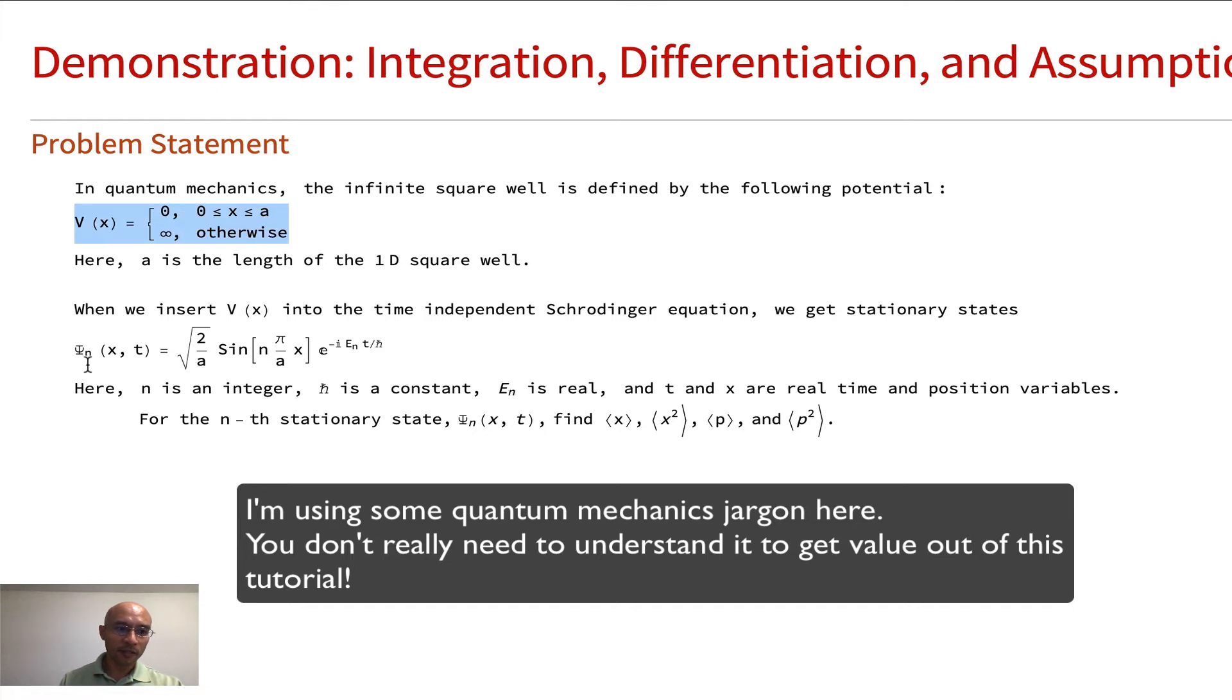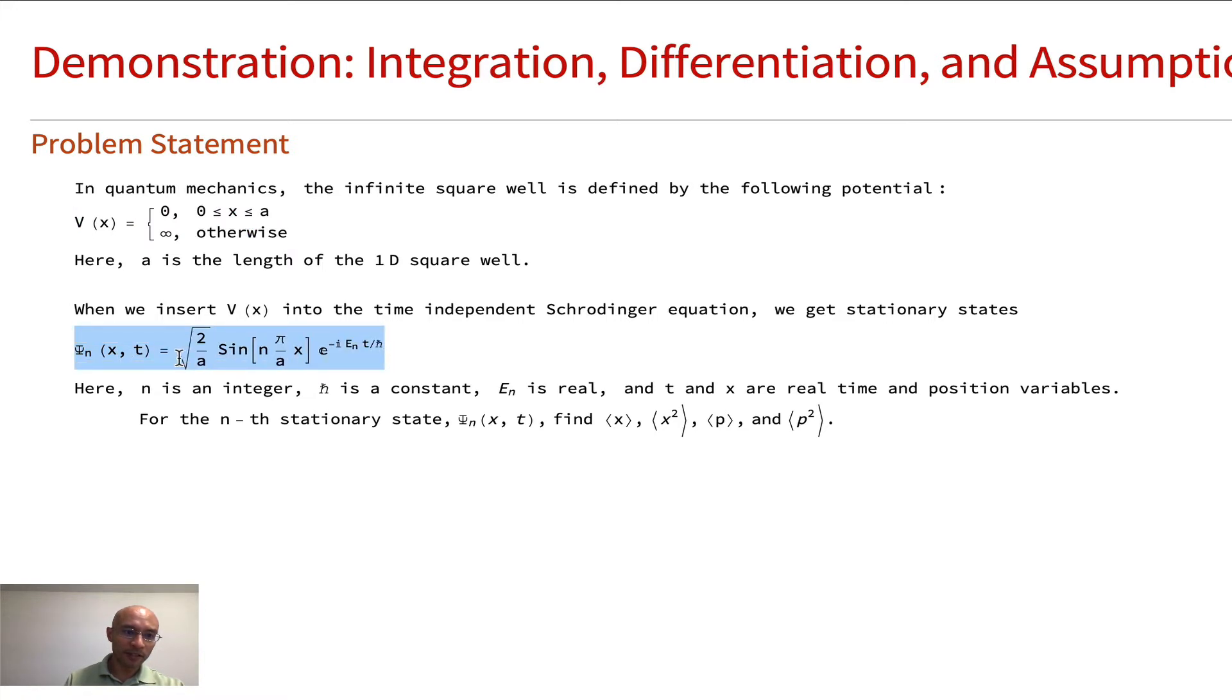Here's the idea. This is a quantum mechanics problem in the infinite square well. Here's the potential. If you studied quantum mechanics, you know that these are the stationary states, the eigenstates of the time independent Schrödinger equation. And then this is the time part of the 1D problem. Here's some information: n is an integer, h bar is a constant, E_n is real, and t and x are real time and position variables. We're looking for the nth eigenstate or stationary state. We're looking for the expectation value for position x or x squared, and then the momentum operator and momentum operator squared.